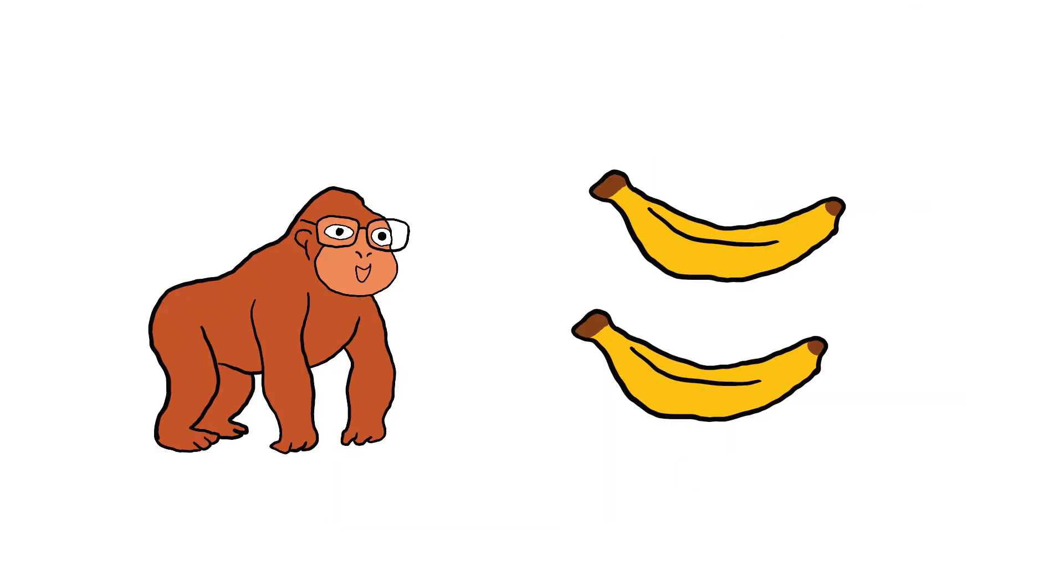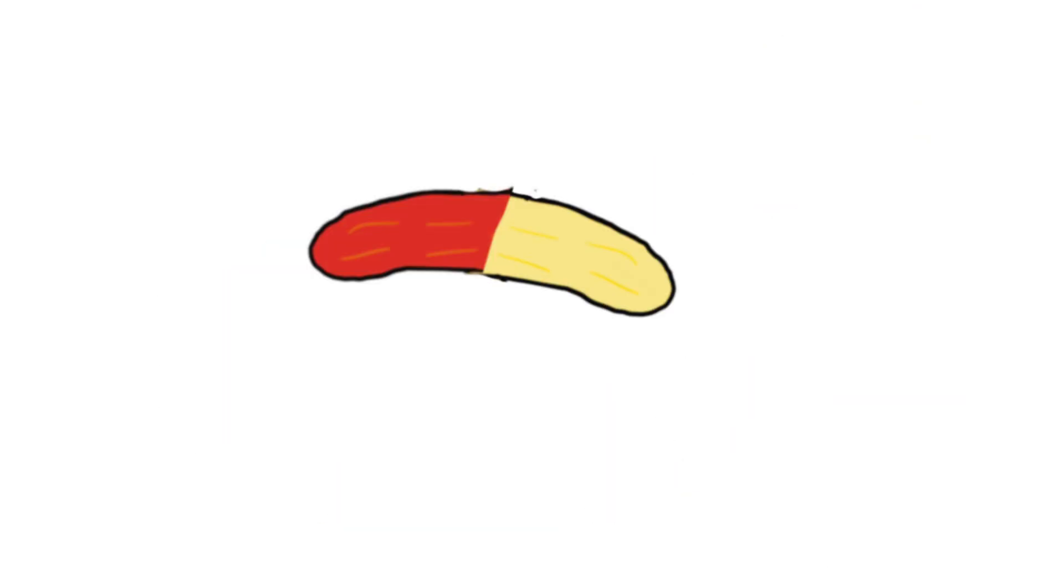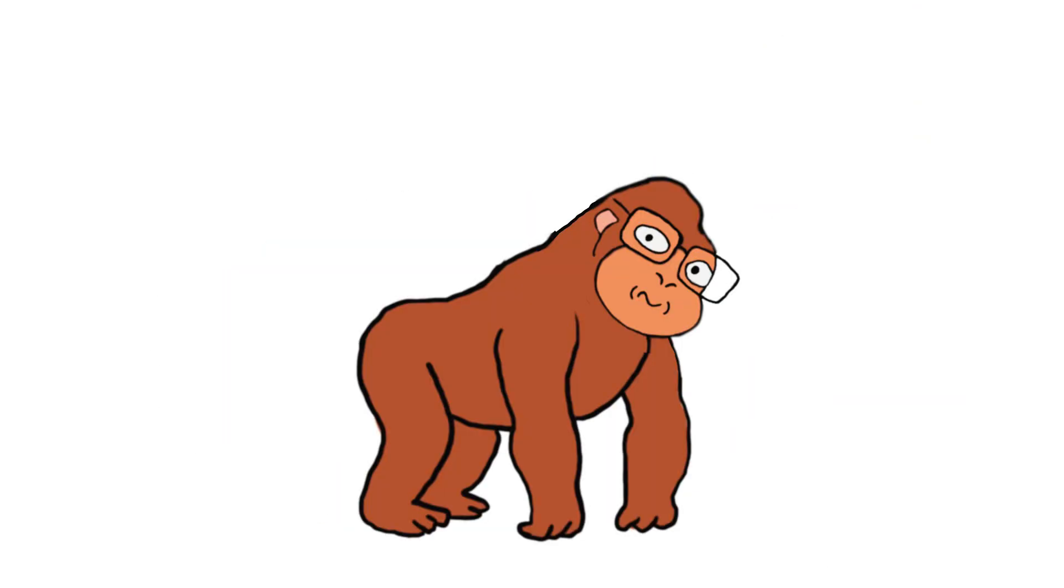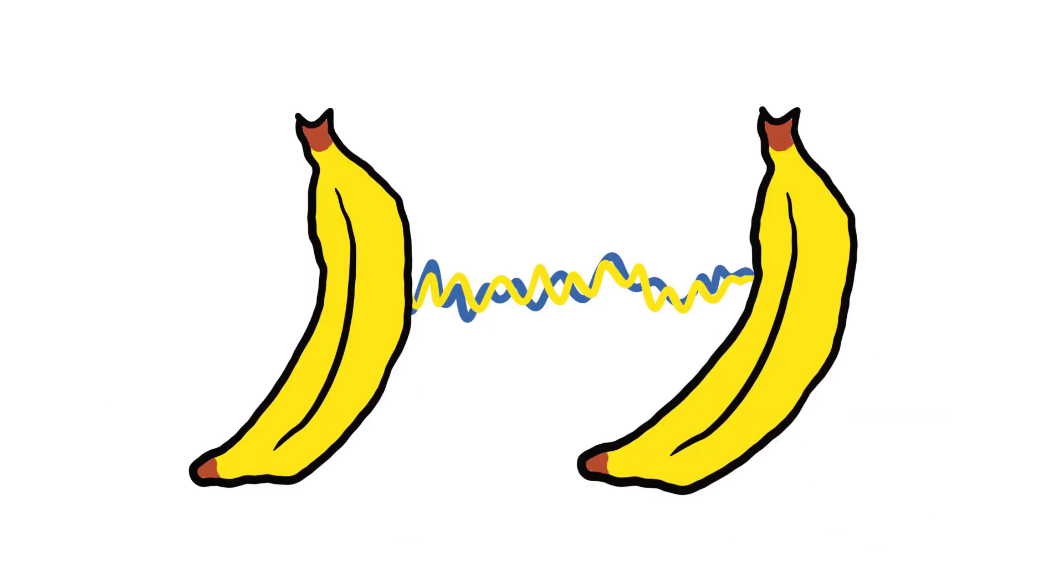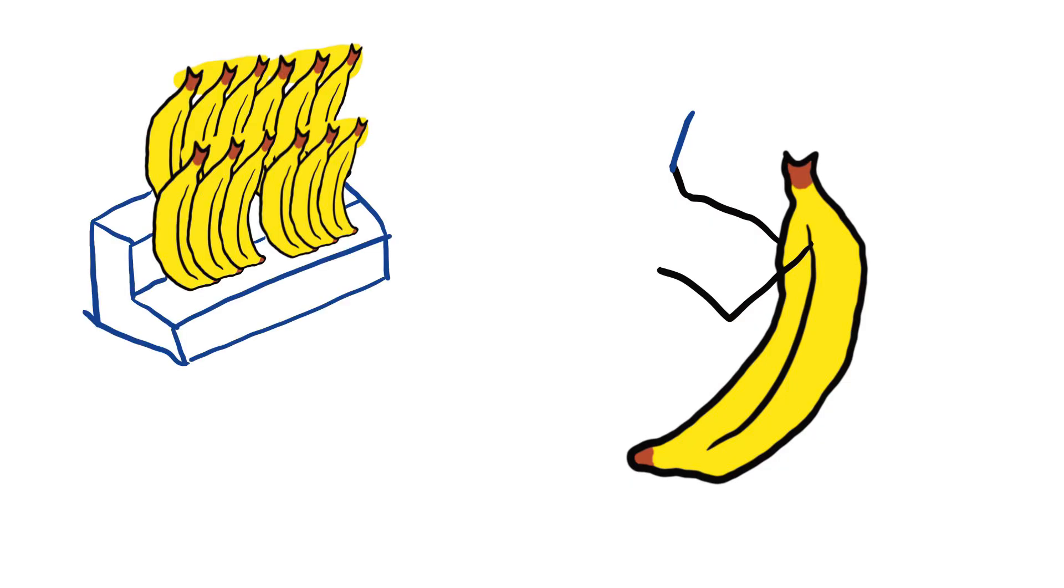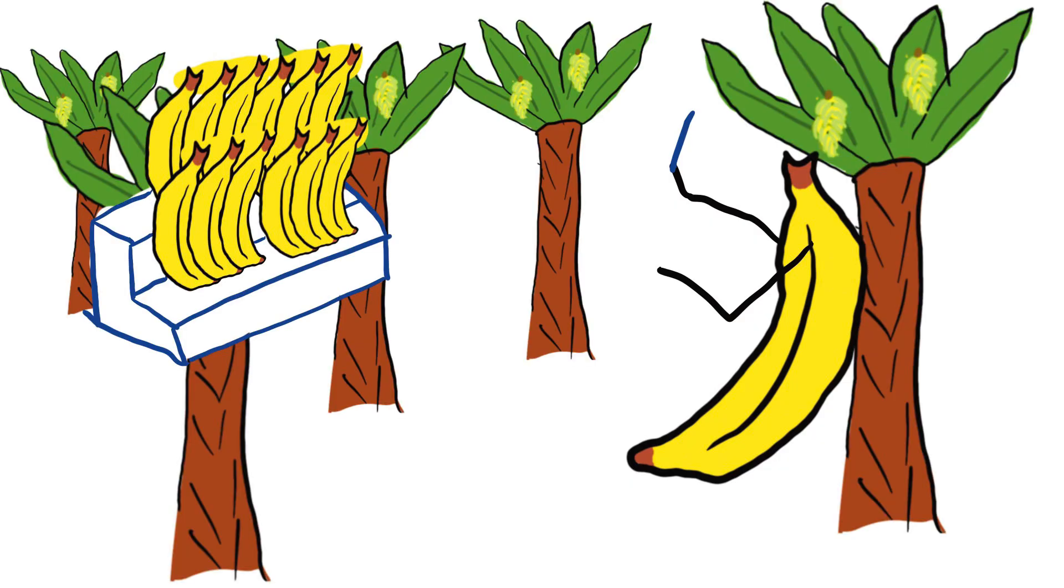So there are no longer two bananas, but two sides of one banana? Exactly. That's why scientists are so fascinated by entanglement, because this phenomenon suggests that there is an invisible conductor orchestrating the particles together in the depths of nature.